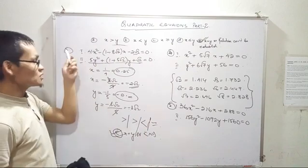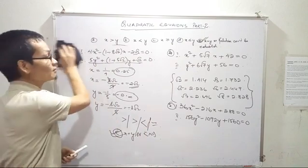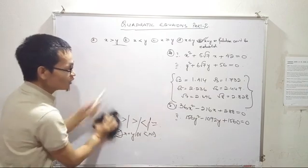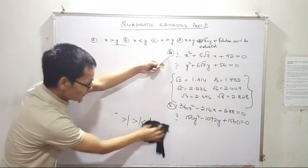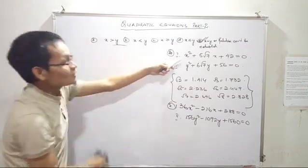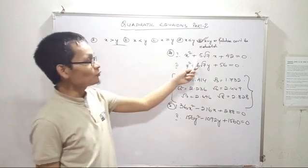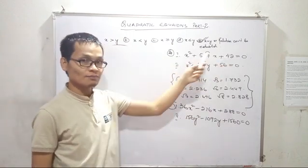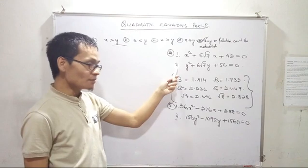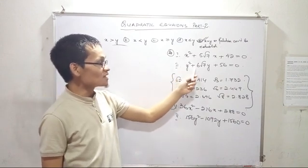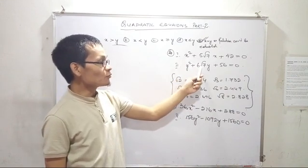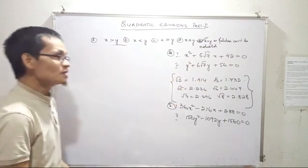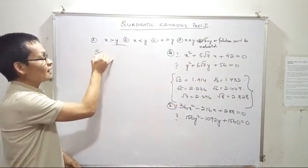Question number 3 and question number 4. For question number 4: equation number 1 is x squared plus 5 root 7 times x plus 42 equals 0. Equation number 2 is y squared plus 6 root 7 times y plus 56 equals 0.